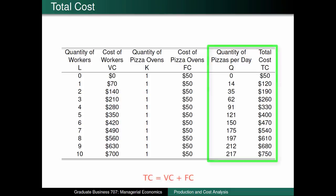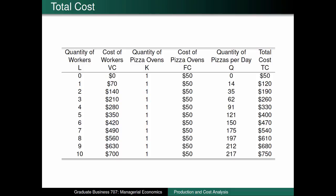Finally, total cost is simply calculated as the sum of variable cost and fixed cost. Notice that the total cost is equal to the fixed cost when the restaurant produces no pizzas, since they would still have to pay for the loan on the pizza oven. Just like with variable cost, total cost increases as production increases.